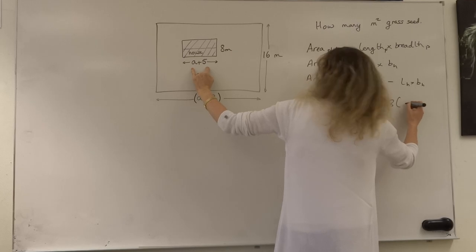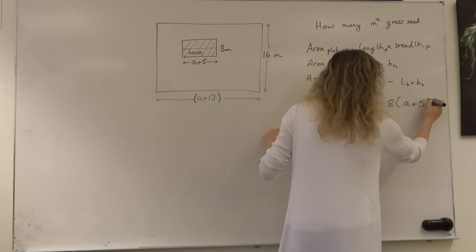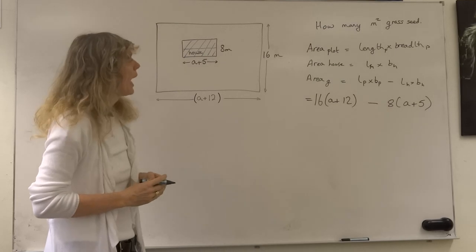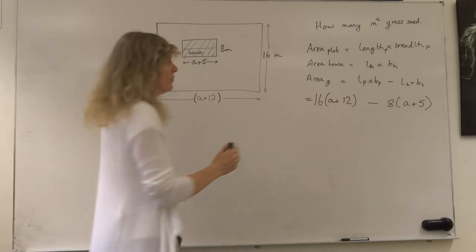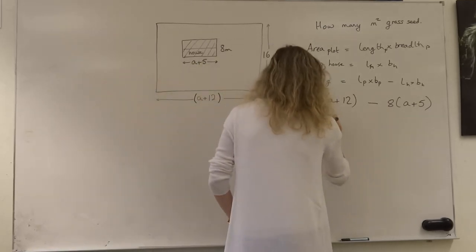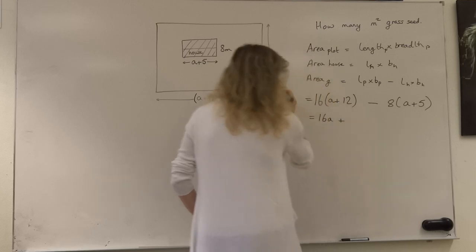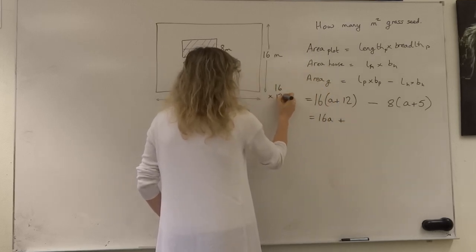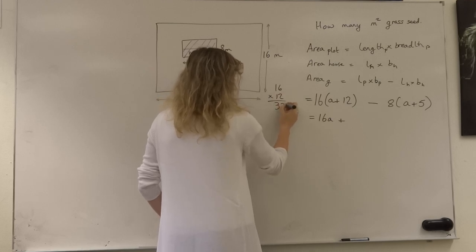And if we expand the brackets out here, we get 16a plus 16 times 12. Quite easy to do because 2 sixteens are 32, add them up, so we get plus 192.